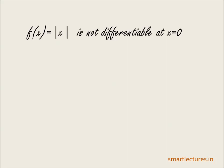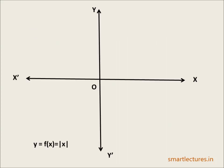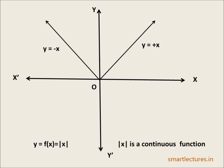Why is that so? Let's draw the graph of the function |x|. You can see from the graph that to the right-hand side of the origin, we have y = x, which is a straight line. Towards the left-hand side of the origin, we have y = -x, also a straight line, and both lines intersect at the origin. Remember, from previous episodes on continuity, the function |x| is a continuous function — there is no break, hole, or jump in its graph.